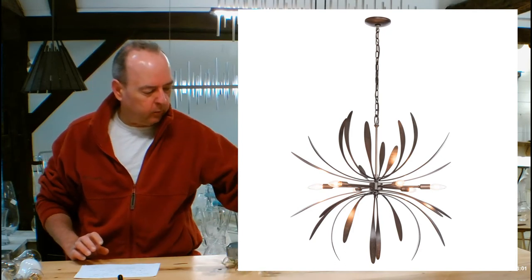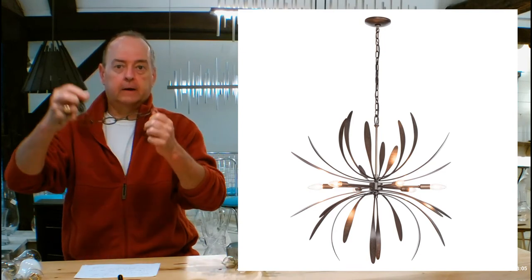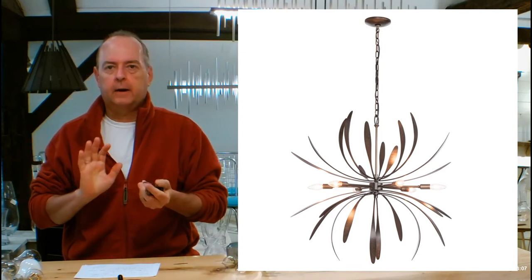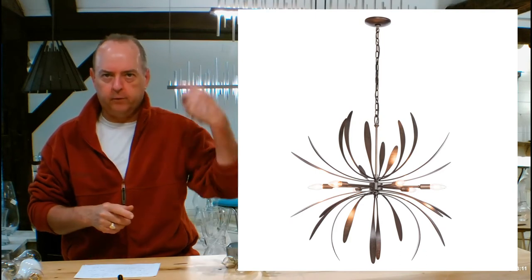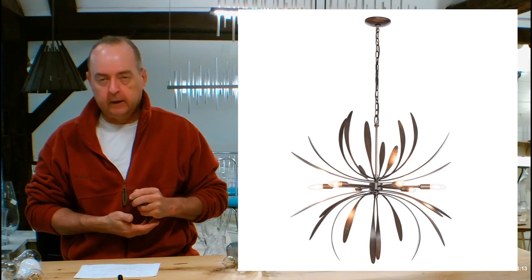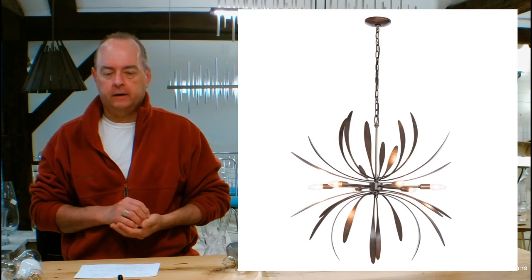It's also going to be shipping with 36 inches of chain. So this is to get you started basically. So you're going to have automatically 36 inches of chain, 15 feet of wire, which is more than enough to get you down from a second story if you're putting this into a foyer or a great room. If you need more chain, we do sell more chain.